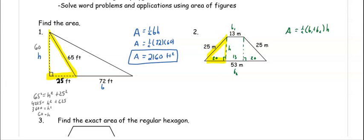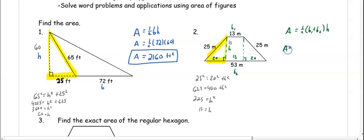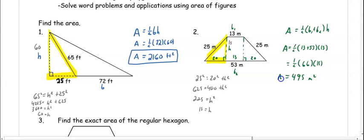So when we do the Pythagorean theorem, we have 25 squared equals 20 squared plus h squared. 625 is equal to 400 plus h squared, so h squared is 225 and h is 15. Substituting in, the area equals one half times 13 plus 53 times 15. We get one half of 66 times 15, so our area is 495 meters squared.